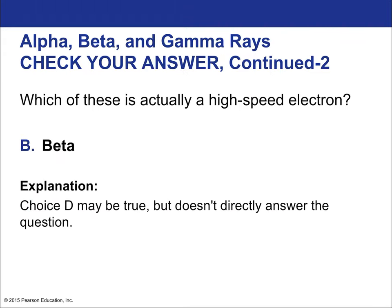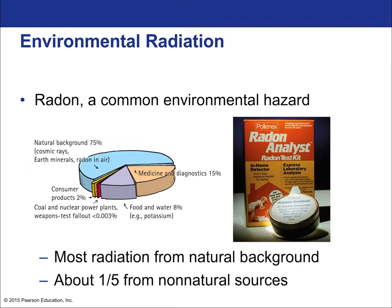Beta particles are high-speed electrons. Radon is a major common environmental radiation hazard. About four-fifths of radiation exposure comes from natural background sources — radon in the air, cosmic rays, and earth minerals together account for about 75% of exposure. Radon-222 is a particularly common and fairly radioactive isotope, contributing significantly to annual radiation doses. You can live your whole life exposed to natural radiation without harm, as we have evolved to handle these levels.